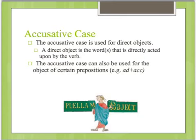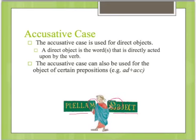The next case we're going to learn is the accusative case. The accusative case is used for direct objects. Notice that subjects and direct objects are different functions of nouns. A direct object is a word or words that is directly acted upon by the verb. Another use of the accusative case is for the object of a preposition, such as 'ad' plus the accusative. Notice in this diagram, when the word 'puella,' meaning girl, goes from subject to object, we do an ending change.